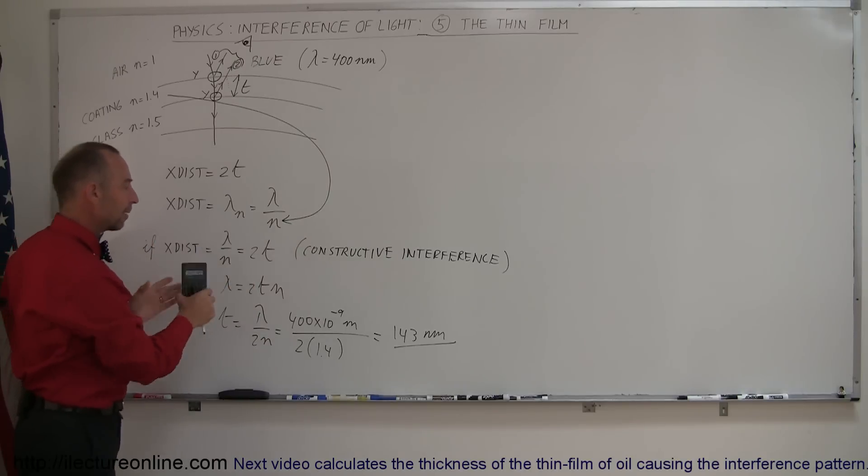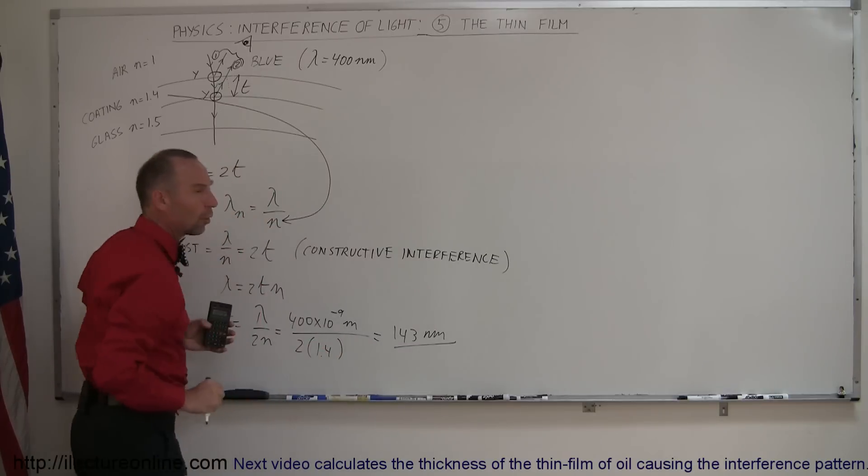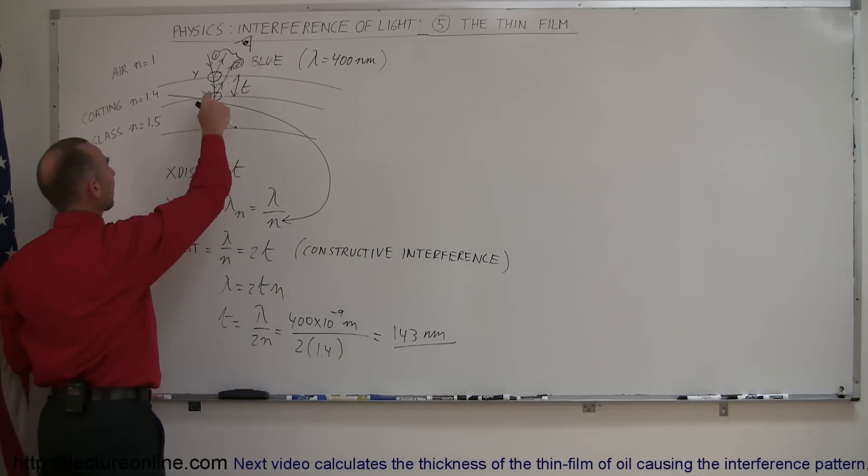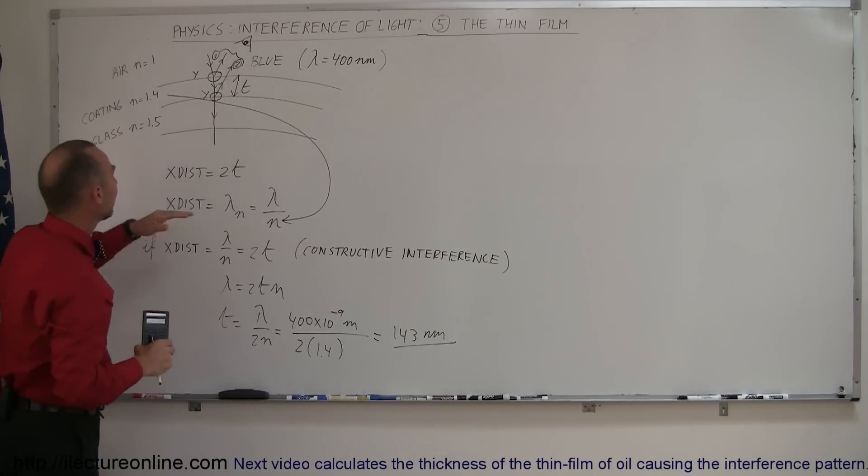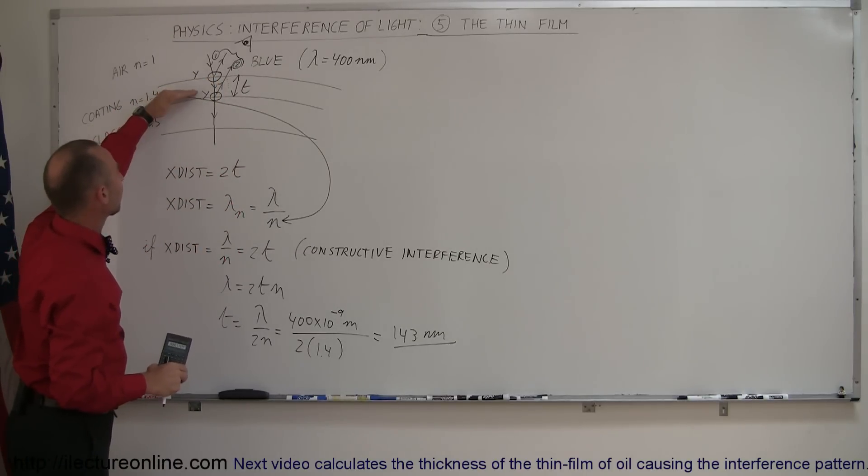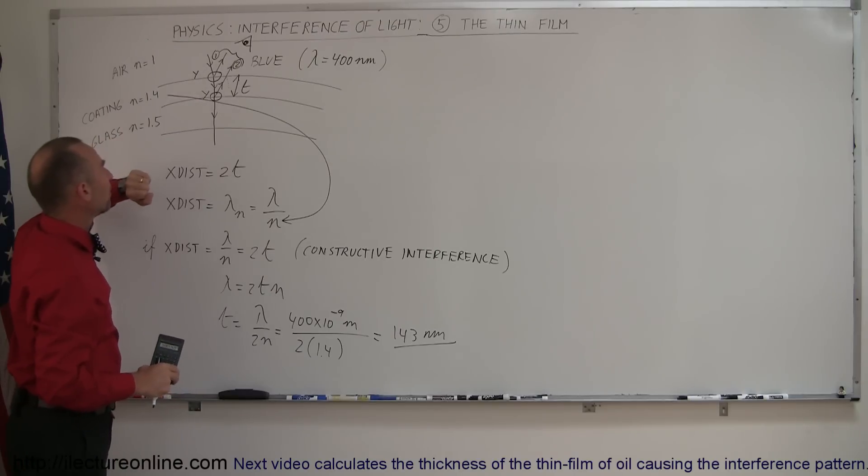So before you complete the problem, before you figure out what the thickness of the coating should be, always take a look and make sure whether or not there are phase differences caused by the reflection of the light, if the index of refraction is greater on the other side compared to where you came from.